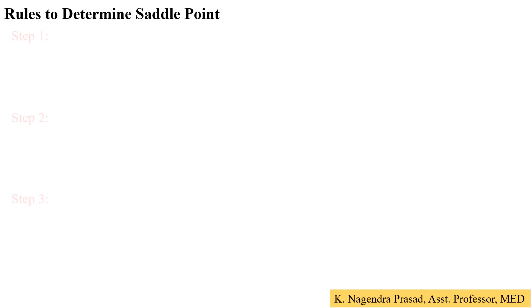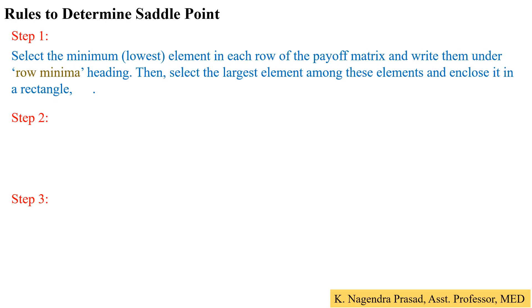The rules to determine the saddle point follow three steps. Step 1: select the minimum element in each row of the payoff matrix and write them under the row minima heading. Then select the largest element among these elements and enclose it in a rectangle. So first write the row minima heading, select the minimum element in each row, and then select the maximum element among them.